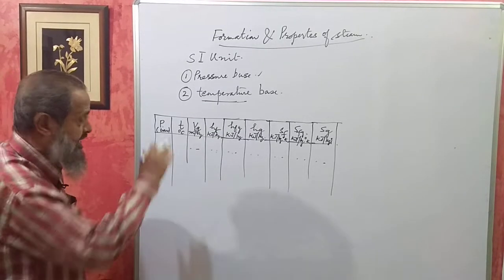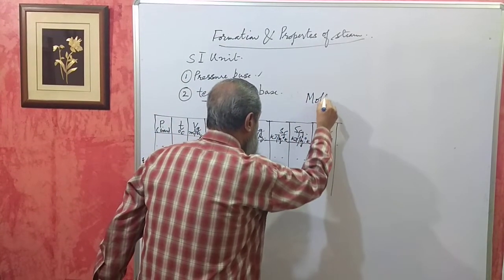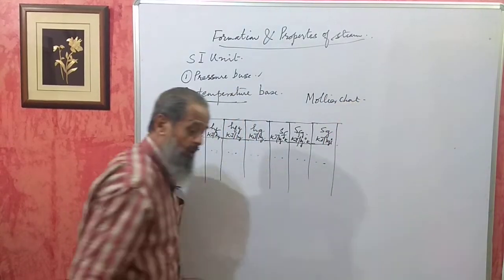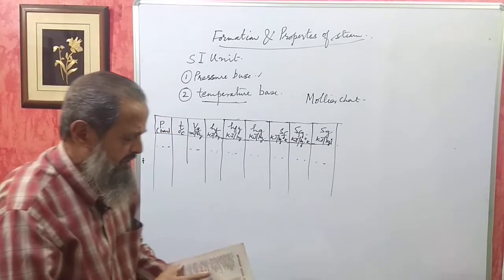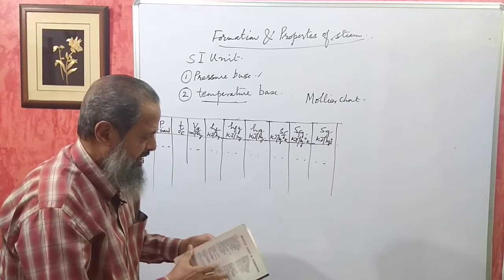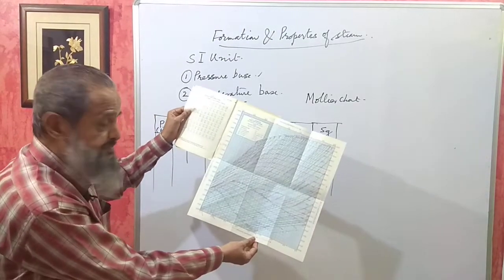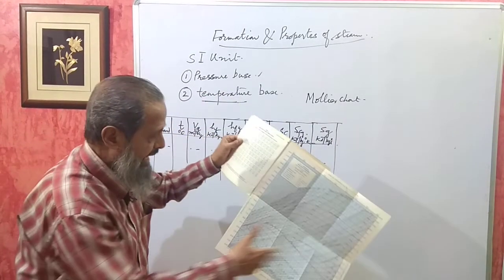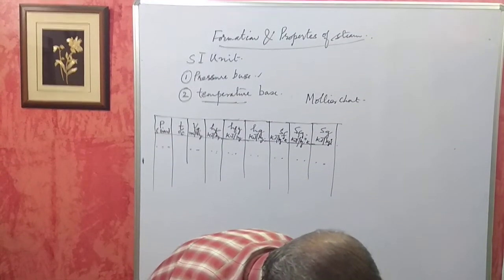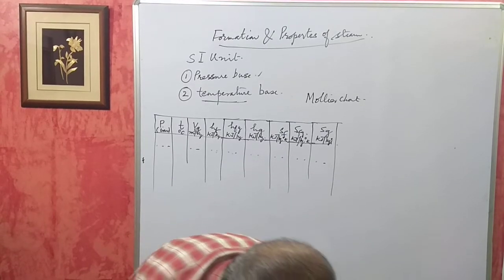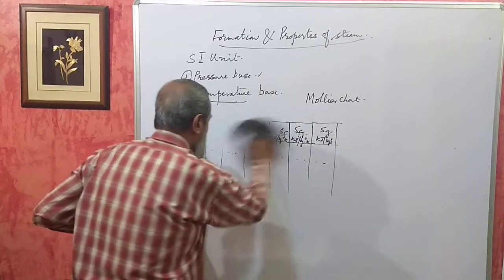Sometimes we can solve these problems using the Mollier chart as well. The Mollier chart comes along with the steam table. It is a graph between enthalpy and entropy — that is, it is also called the H-S diagram, meaning the enthalpy-entropy diagram.